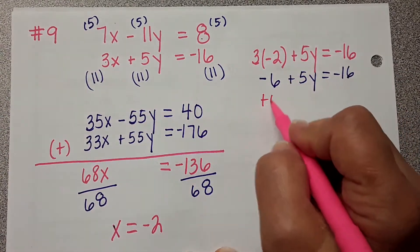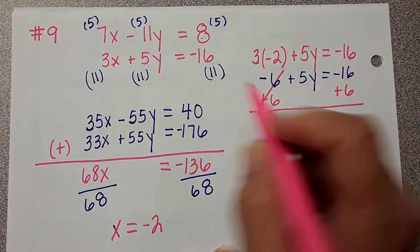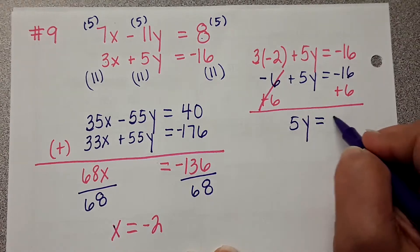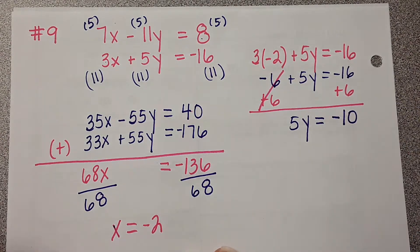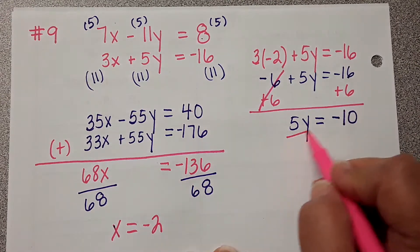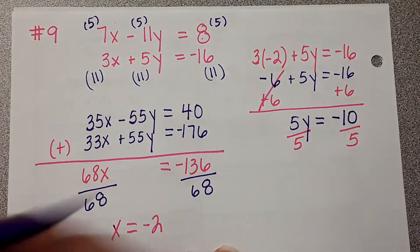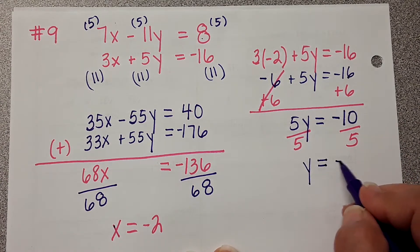I add 6 to both sides. Negative 16 plus 6 is negative 10. Then I divide by 5, and y equals negative 2.